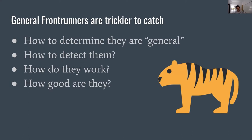General front-runners are trickier to catch. It is harder to understand what is a general front-runner when just looking back at the blockchain. With arbitrageurs, we can understand there was some arbitrage opportunity and it happened. But what is different from one front-running bot to another? Why is one transaction a general front-running attempt and one is not? This is what we set out to find out.